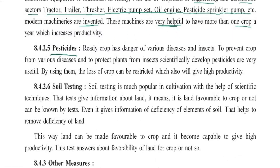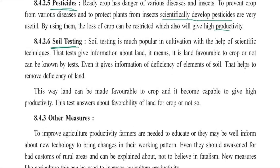The next method is developing and using good pesticides. Using scientifically developed pesticides to protect crops against diseases and insects means waste will decrease, crop destruction will decrease, and productivity will increase. Soil testing is also very important. It is essential that farmers know which crop will grow best in their soil. Through soil testing, crop selection and seed selection can be done properly, so that the land is made favorable for crops. If the land is favorable, productivity will be high. Universities and research centers should conduct soil testing.